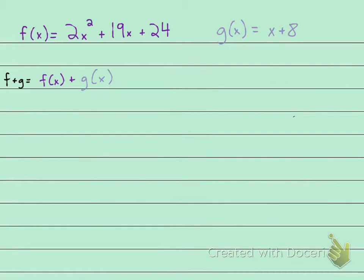So let's do that. The f of x is 2x squared plus 19x plus 24 plus the g of x, which is x plus 8. All right, x plus 8. And then we're adding these two together.